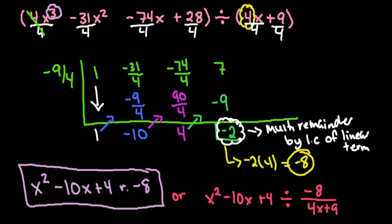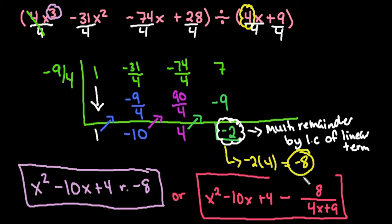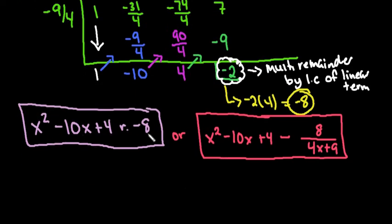Sorry — I mistakenly wrote 'divided by' when it should have been 'minus.' So the correct form is: x squared minus 10x plus 4, minus 8 divided by (4x plus 9). How you write the answer depends on your course — in Algebra 2 you'd typically write the fraction form; in Algebra 1 or other courses it may be acceptable to just state the remainder as negative 8. The quotient is the polynomial part; the remainder is the separate value.